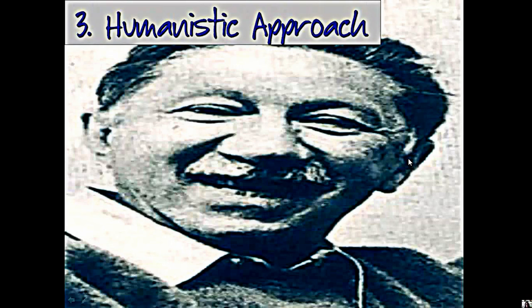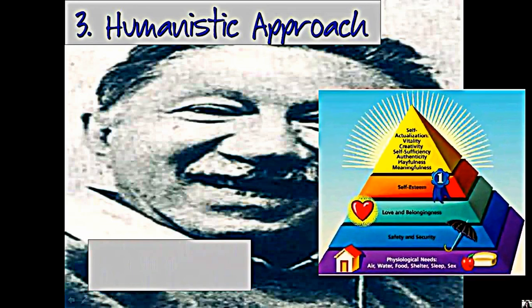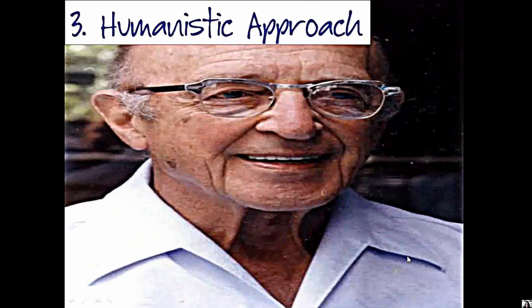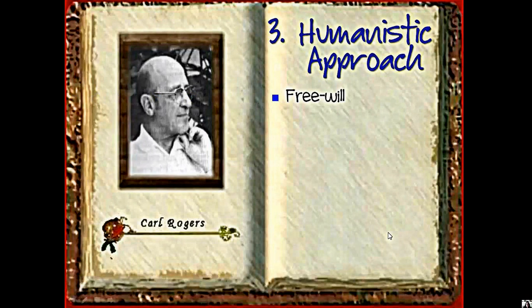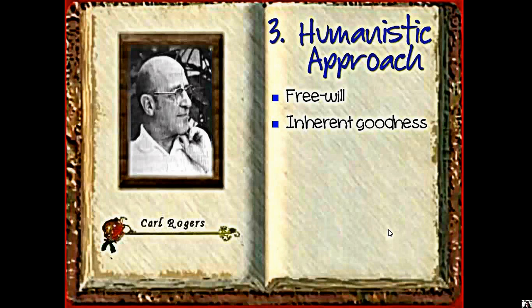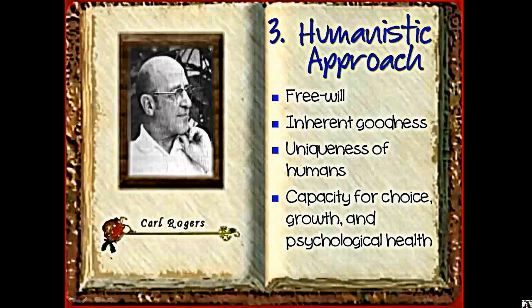The first of those is the humanistic approach — the happy approach, if you will. You've got a really nice happy picture here of Abraham Maslow. You may be familiar with Maslow's hierarchy of needs — he was developing his theory around the 1950s. And this is Carl Rogers, also a humanist, but he's more well known for his therapy called person- or client-centered therapy, where we give the human all the control. As humanists, we believe that we all have free will, that we can make our own rational choices, we have inherent goodness, we're each unique, and we have the capacity for choice, growth, and psychological health.